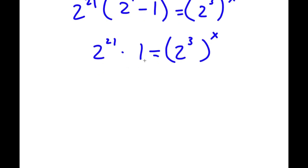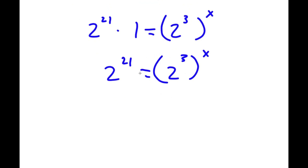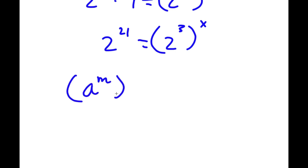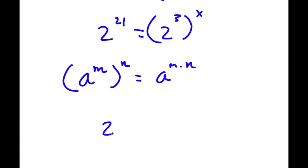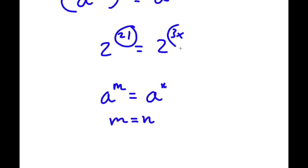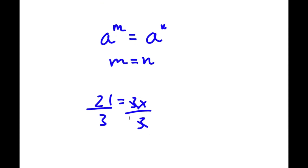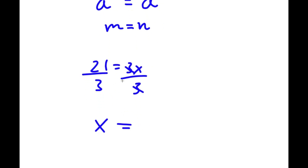Anything times 1 is itself, so 2^21 times 1 is simply 2^21. Using the power-of-a-power rule, 2^3 to the power of x equals 2^(3x). So I have 2^21 is equal to 2^(3x). Since the bases are equal, the exponents must be equal: 21 equals 3x. Dividing both sides by 3, these cancel and x equals 21 divided by 3, which is 7. So x equals 7 is my answer.